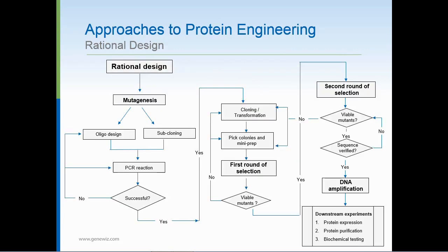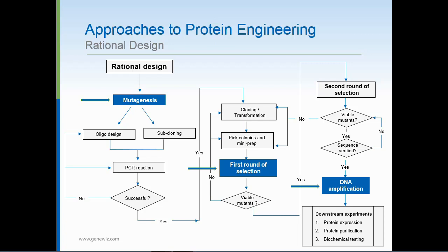Now, I know this slide is particularly busy, but let's move through it together. Within this process, mutagenesis is critical, as it generates the mutants for downstream applications. Hence, the mutagenesis step must be successful; otherwise, the entire process would fail. Taking a closer look, the generation of mutants can be further divided into three steps: beginning with mutagenesis, followed by screening and selection, and finally, DNA amplification.